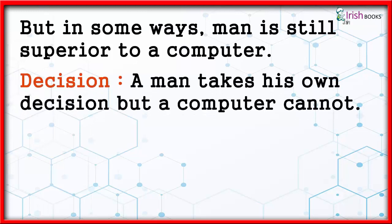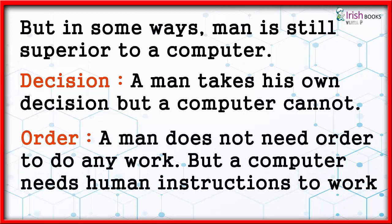Decision: a man takes his own decision, but a computer cannot. Order: a man does not need an order to do any work, but a computer needs human instructions to work.